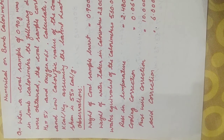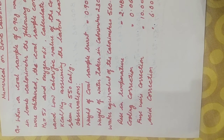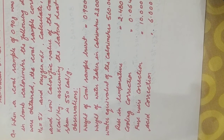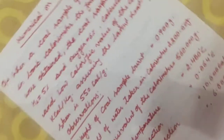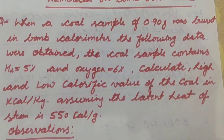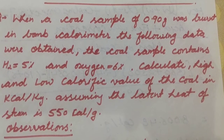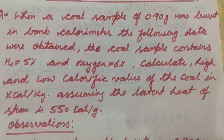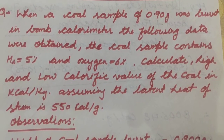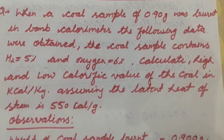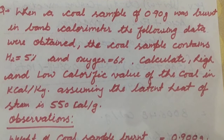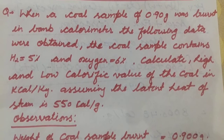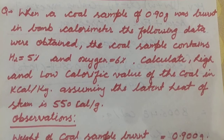We will solve three numerical methods one by one. The first numerical is based on the bomb calorimeter. Read the question carefully: when a coal sample of 0.90 gram was burnt in a bomb calorimeter, the following data were obtained. The coal sample contains 5% hydrogen and 6% oxygen. Calculate the high and low calorific value of coal in kilocalorie per kilogram, assuming the latent heat of steam is 550 calories per gram.